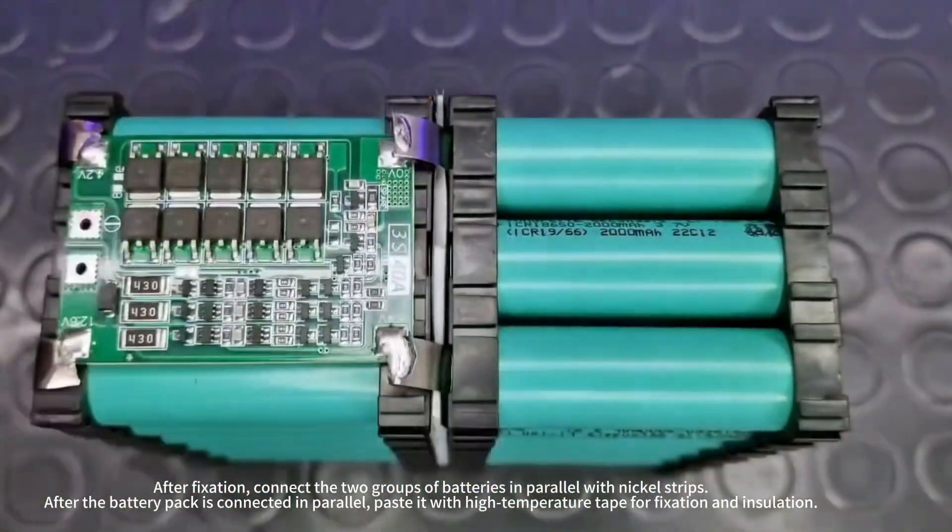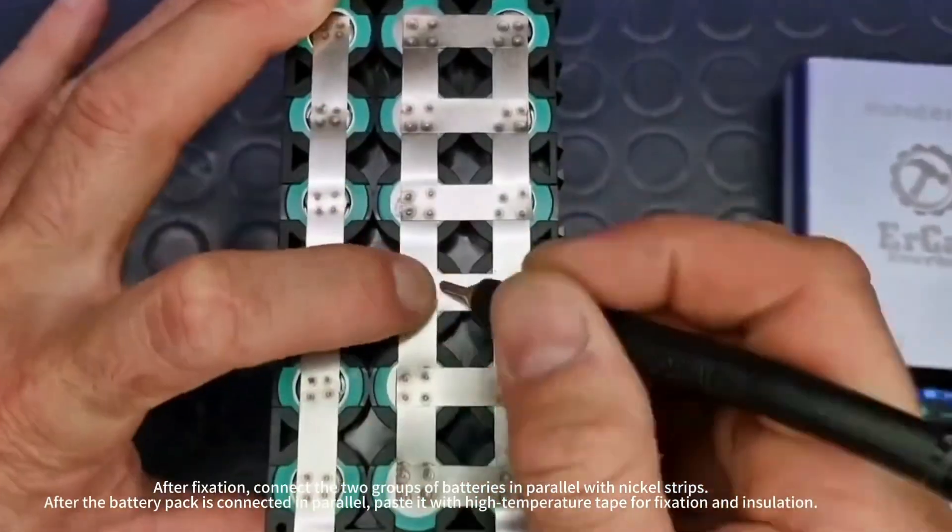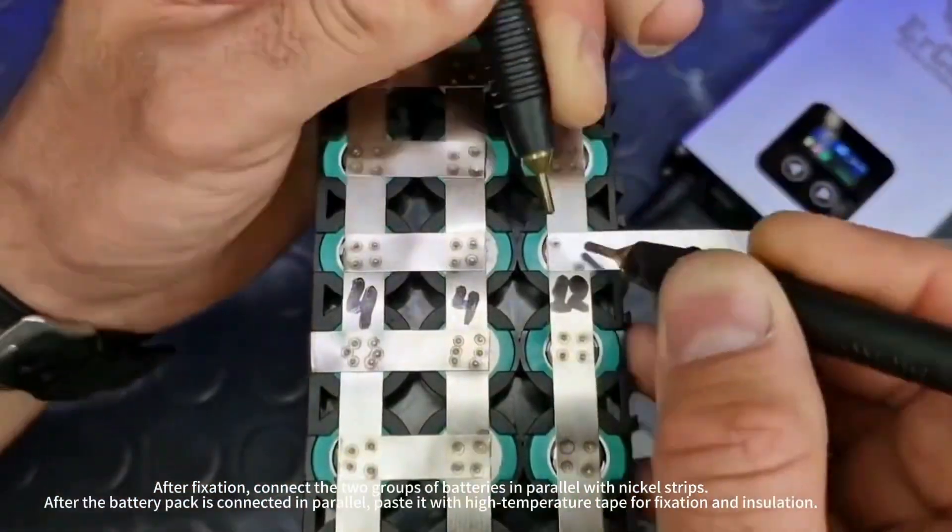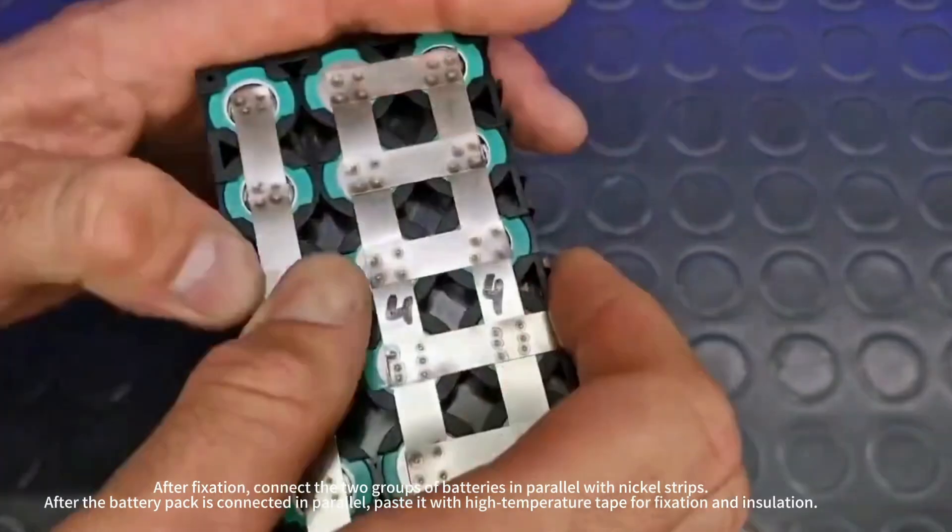After fixation, connect the two groups of batteries in parallel with nickel strips. After the battery pack is connected in parallel, paste it with high-temperature tape for fixation and insulation.